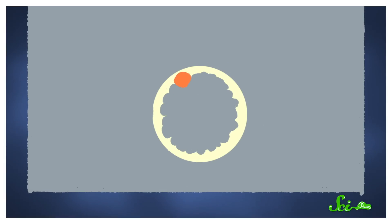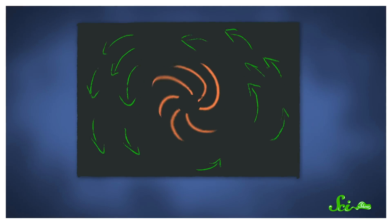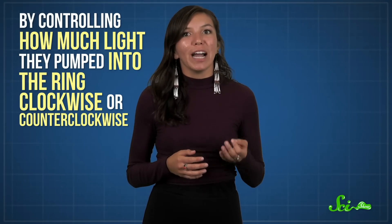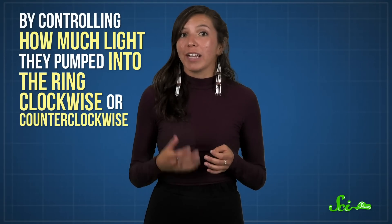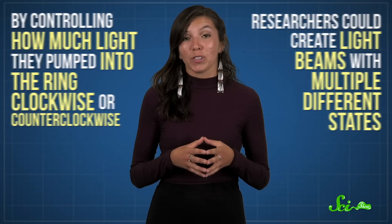And finally, in a paper published in May of 2020, researchers at the University of Pennsylvania announced that they had done just that. They designed a special kind of laser that sent light into a tiny middle ring, just 7 thousandths of a millimeter across. As the light looped around inside the ring, it picked up some orbital angular momentum. Then it would scatter off little ridges inside the ring and shoot back out into the lab. As it left the ring, it carried the same orbital angular momentum it had while still inside. And what made this so successful was that by controlling how much light they pumped into the ring—clockwise or counterclockwise—researchers could create light beams with multiple different states, all from a single source. Those same researchers even developed a special detector that could measure that momentum, meaning it could decode the information in those beams.